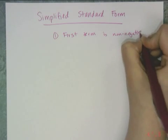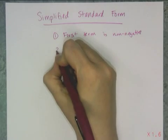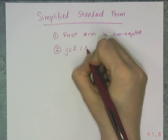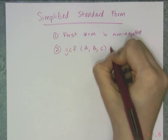And the second one is that the greatest common factor of a, b, and c have to equal 1.